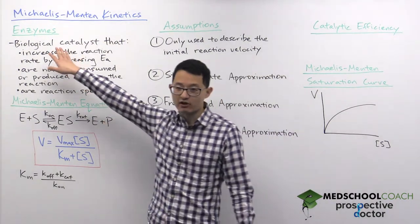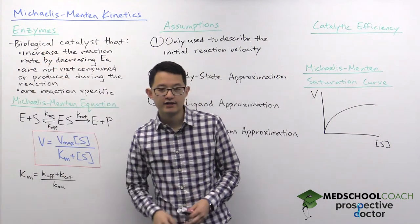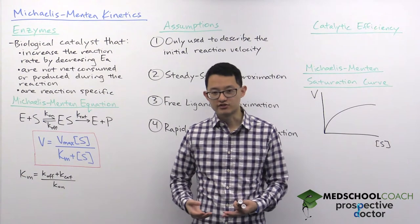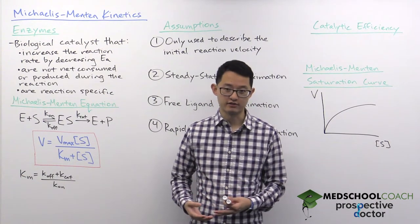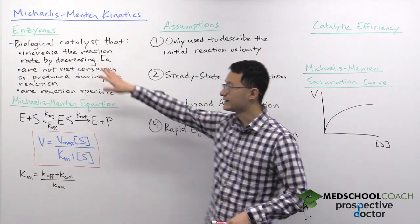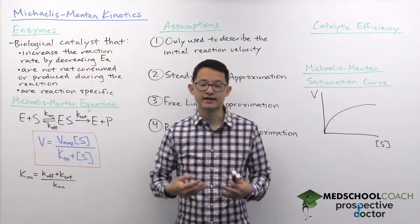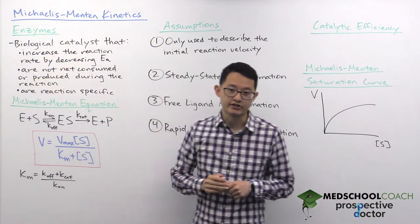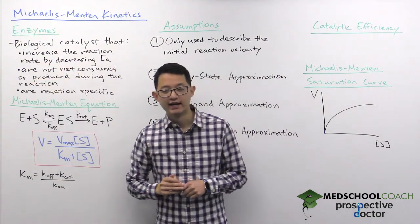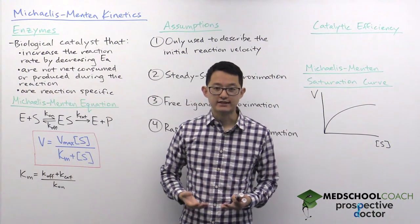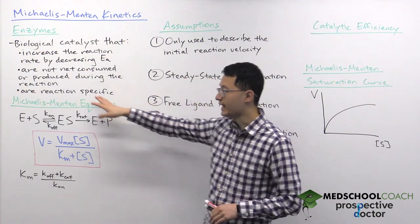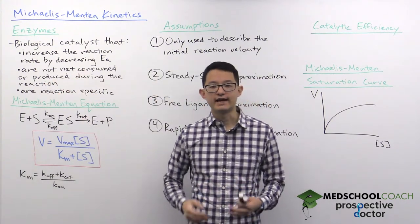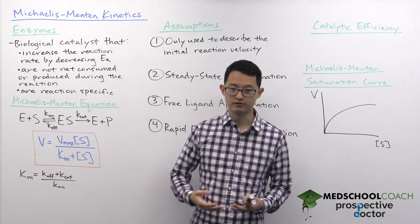As you might recall, enzymes are biological catalysts. Within cells, they're generally made of proteins, but there are some situations where you have enzymes that are made of RNA molecules. As catalysts, there are several features of enzymes you should be familiar with. Number one, enzymes increase the rate of the reaction by decreasing the activation energy. They do this by stabilizing the transition state. Number two, enzymes are not net consumed or produced during the reaction, so we often say that enzymes are recycled during the reaction.